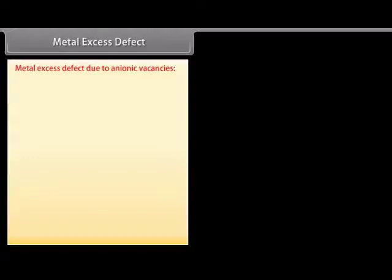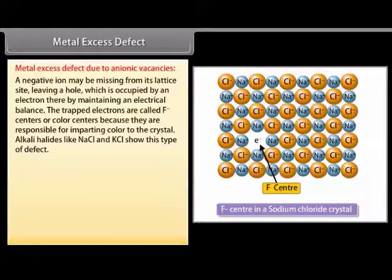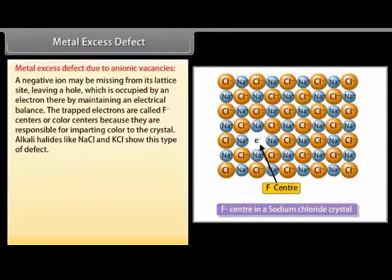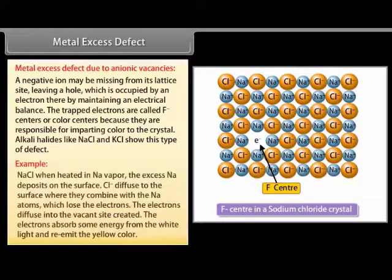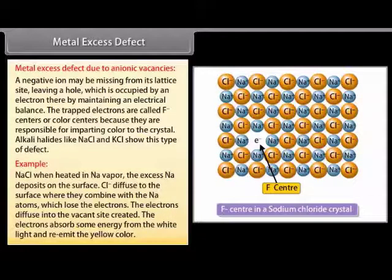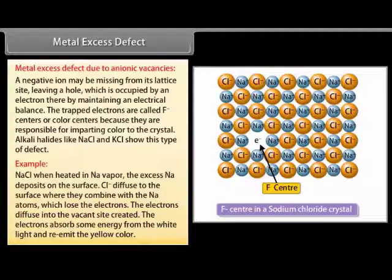Metal excess defect due to anionic vacancies: a negative ion may be missing from its lattice site, leaving a hole which is occupied by an electron, thereby maintaining electrical balance. The trapped electrons are called F-centers or color centers, because they are responsible for imparting color to the crystal. Alkali halides like NaCl and KCl show this type of defect. When NaCl is heated in sodium vapor, Na deposits on the surface; Cl⁻ diffuses to the surface where it combines with Na atoms which lose electrons. The electrons diffuse into the vacant sites and absorb energy from white light, re-emitting yellow color.